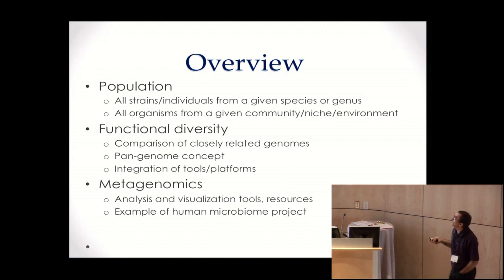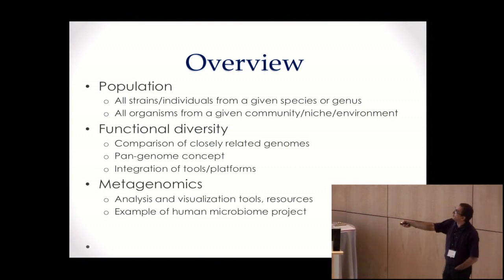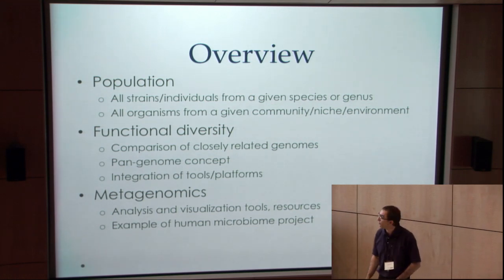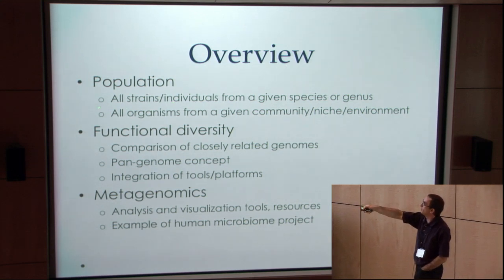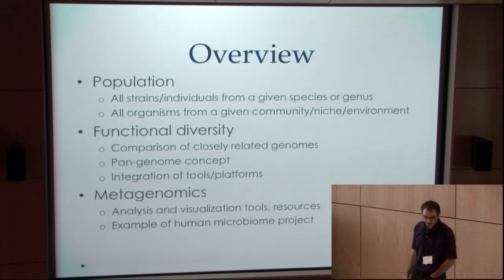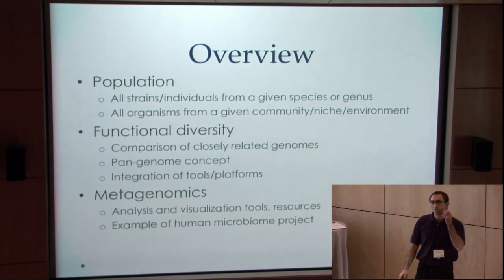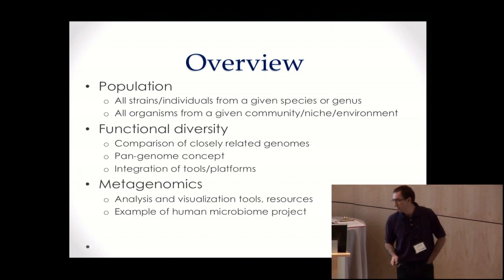When I hear population, what do I think about? There are two ways of thinking about it. You could think about all the strains or individuals from a given species or genus — say humans, streptococcus, or whatever. Or you could think about the population as all the organisms that live in a given community — a niche environment like an acid mine drainage area, some component of your mouth, a tooth, or some niche in the soil.